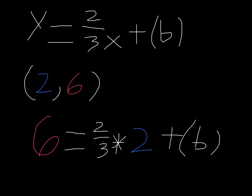Now, we need to multiply 2 thirds times 2. And 2 thirds times 2 is equal to 1 and 1 third.